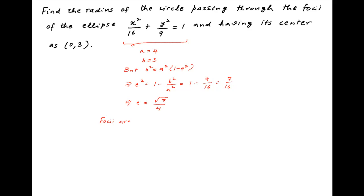Now the coordinates of the foci of the ellipse are (±ae, 0). Putting in the value of a and e, this implies that the coordinates of the foci are (±4×√7/4, 0) or (±√7, 0).